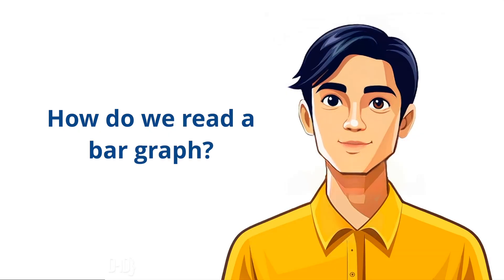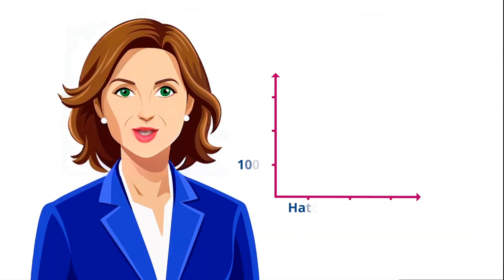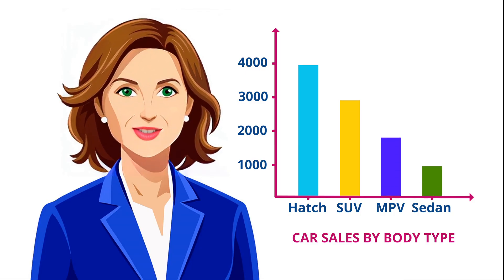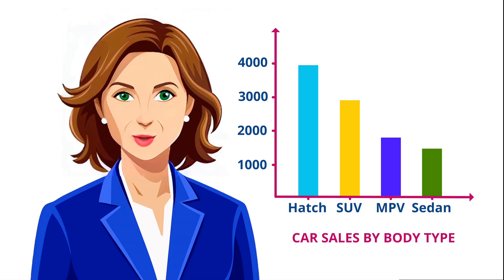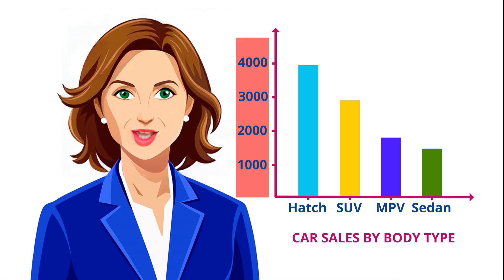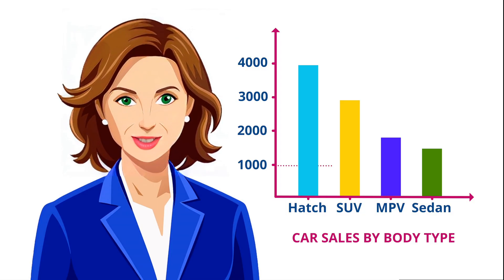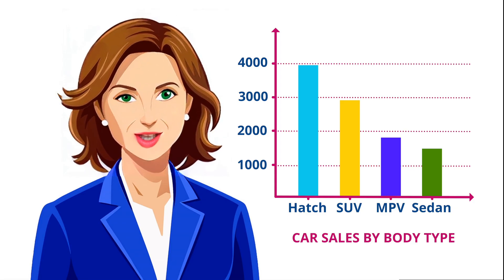How do we read a bar graph? First, look at the labels on the x-axis (horizontal) and y-axis (vertical). The x-axis shows categories, while the y-axis shows the values. To interpret, see where the top of each bar reaches on the y-axis to understand the value.